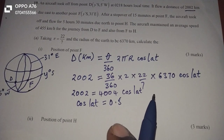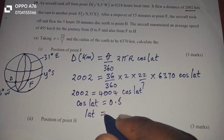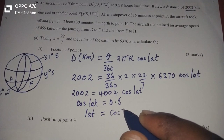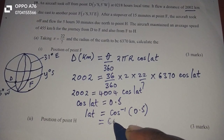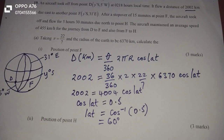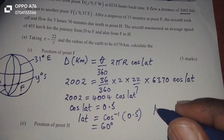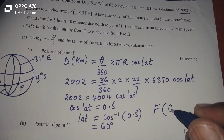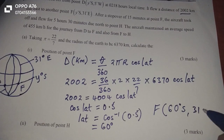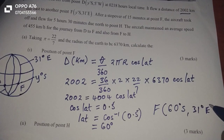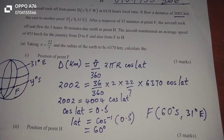This means we can obtain the latitude itself, which is the cosine inverse of 0.5. When you compute this, we get 60 degrees. This means that F is a place 60 degrees in the south, then 31 degrees in the east. So that is the position of F.